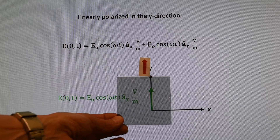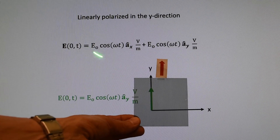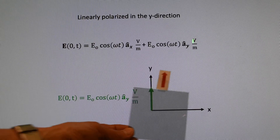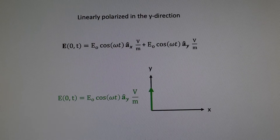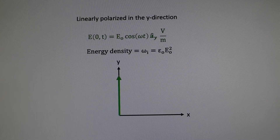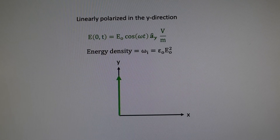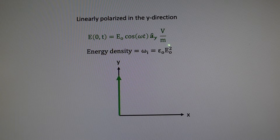When the polarizer is aligned in the y direction, the x component will be completely absorbed and only the y component will come through. The electromagnetic wave is linearly polarized in the y direction. The energy density in our vertically polarized electromagnetic wave is the permittivity of free space times the amplitude of the electric field intensity squared.